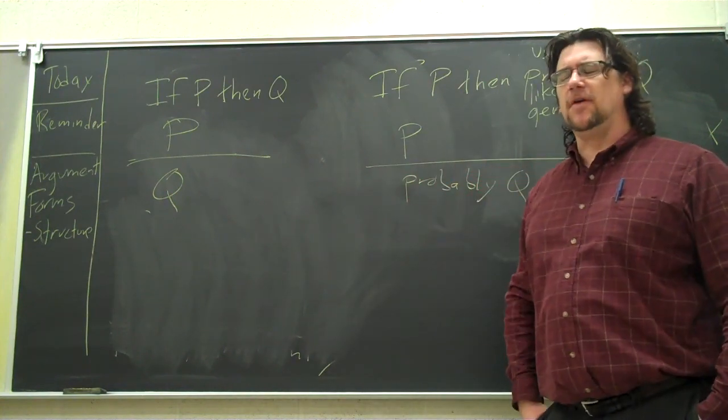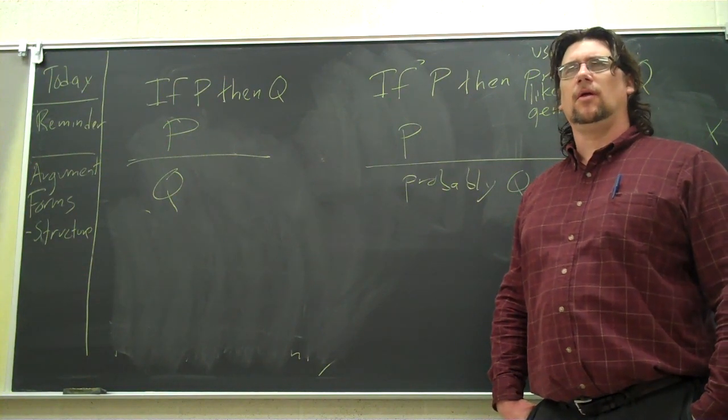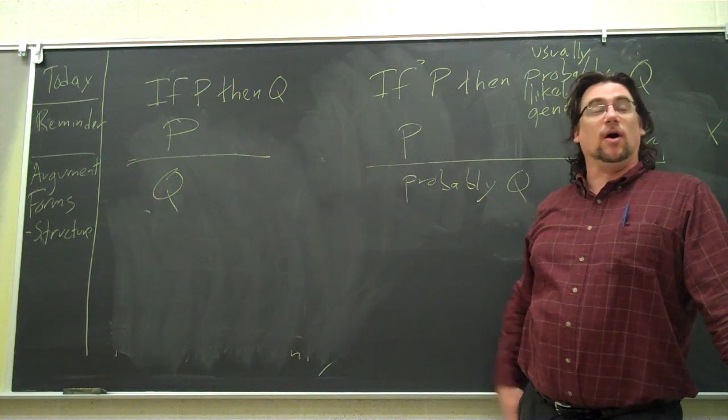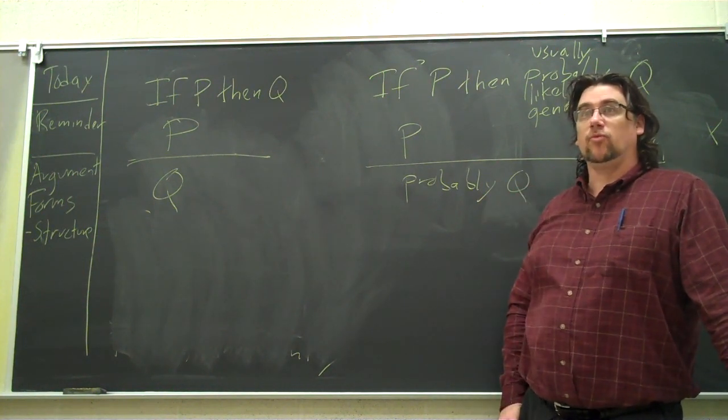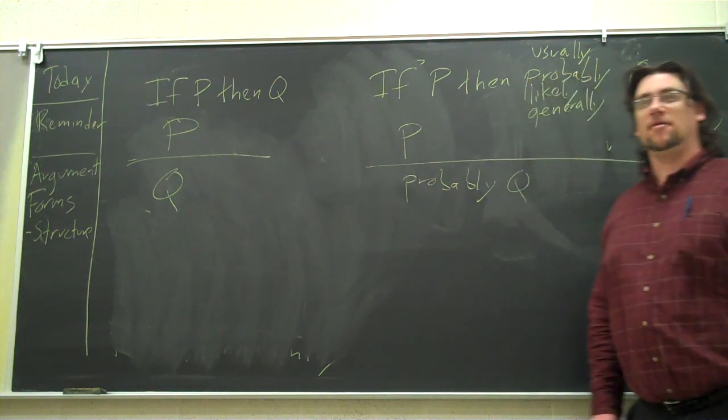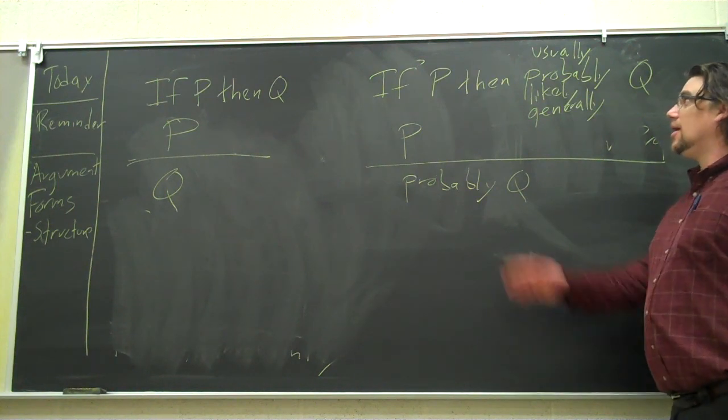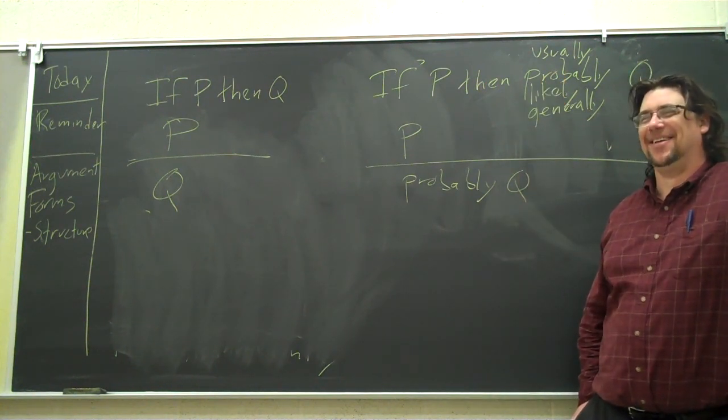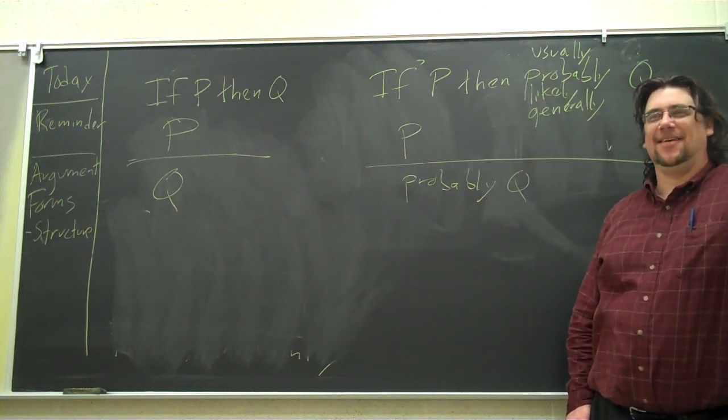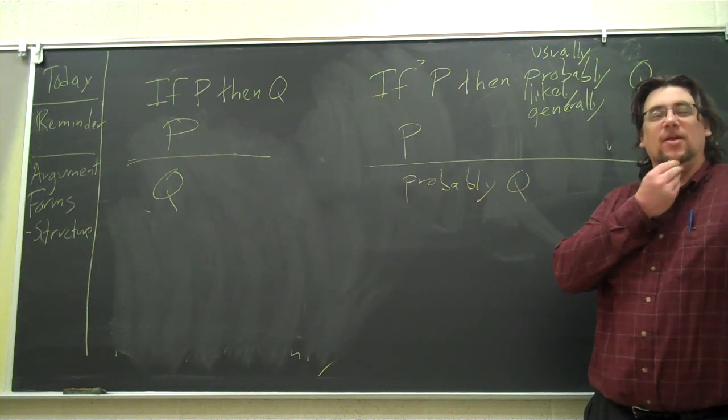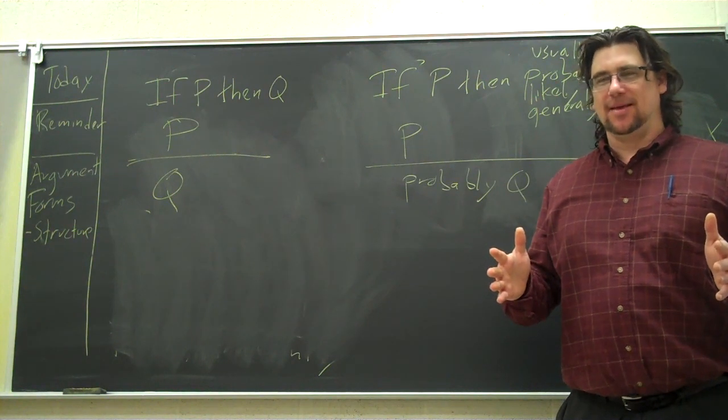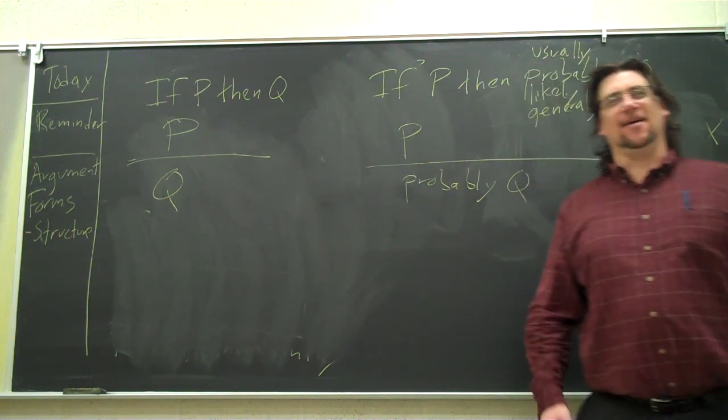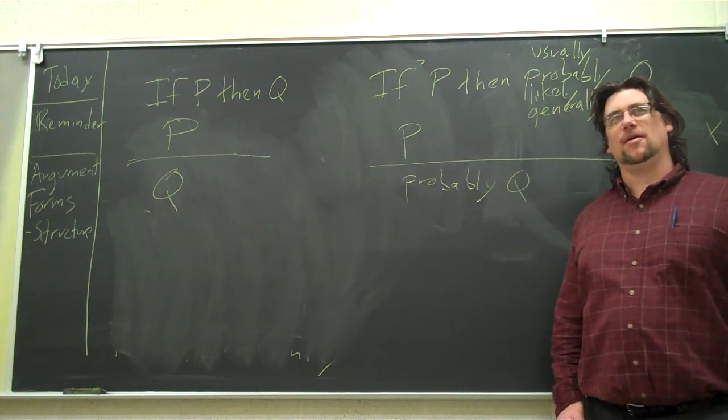So if P then Q. Let's say we take the first one that we had. P, therefore Q. Right? Let's say we change it from this, which is absolute, to if P then probably, or likely, or usually, Q. Right? And then we say P is in fact the case, therefore probably Q. What are some things that you feel fairly certain about that have some exceptions? Think about the dog nose again. The dog's nose is hot and dry, the dog is probably sick. Or you just have a dog that has a hot dry nose.